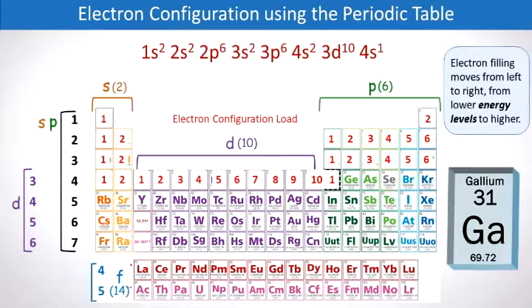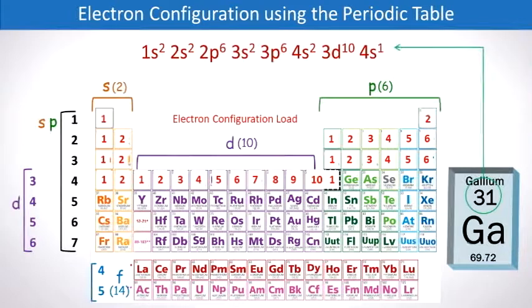And then we have a 4p1 to give us the electron configuration for gallium. And note that the superscripts in this electron configuration corresponds to 31 electrons as the case of gallium.